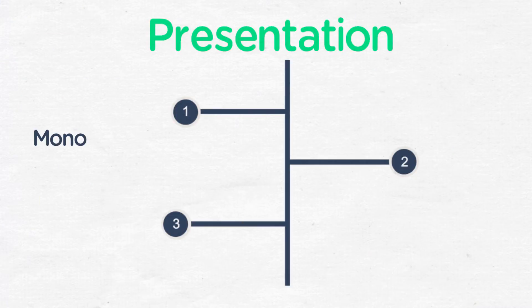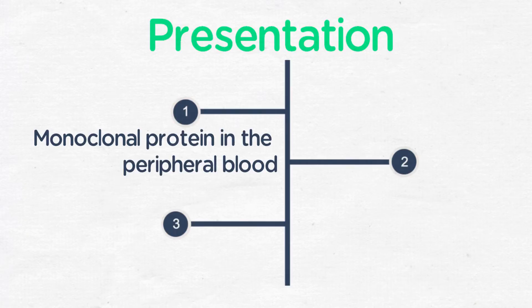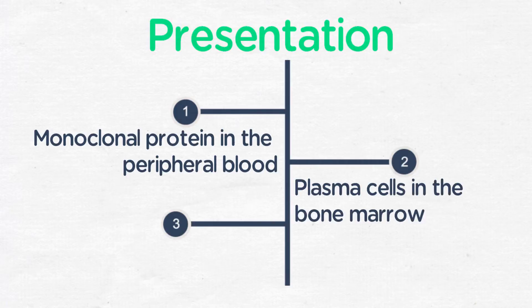Myeloma is defined by having a monoclonal protein in the peripheral blood or light chains — either a heavy chain or a light chain — as well as the presence of clonal plasma cells in the bone marrow. We usually define it as 10% or more plasma cells in the bone marrow.